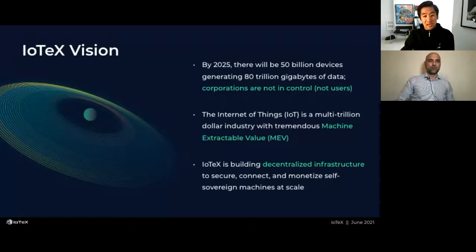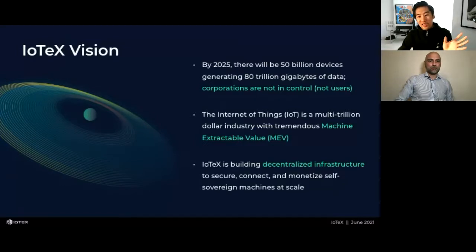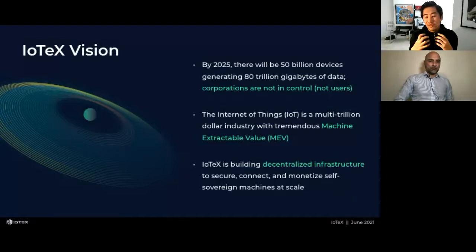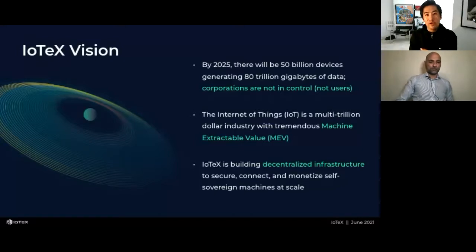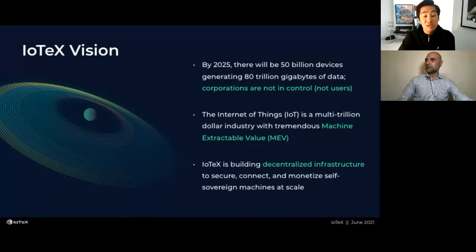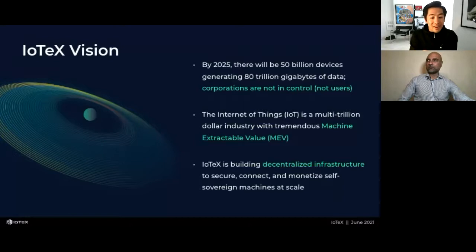The IoT industry, composed of billions of devices and data, is a multi-trillion dollar industry. Similar to miner extractable value in DeFi, we consider IoT to have what we call machine extractable value. IOTEX is building decentralized infrastructure — not only the protocol but also IoT-oriented middleware and decentralized identity for devices — in order to secure, connect, and help users monetize self-sovereign machines at scale.